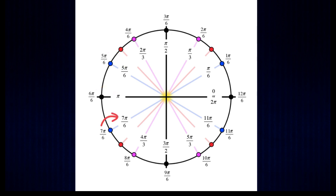Seven pi over six stays the same. Eight pi over six reduces to four pi over three. Nine pi over six reduces to three pi over two. Ten pi over six reduces to five pi over three, eleven pi over six stays the same, and twelve pi over six reduces to two pi.